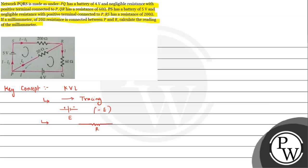Secondly, if we move across a resistance of value R and a current I is passing through it, and our tracing direction is the same as the current direction, there will be a potential drop and it will be written as minus IR. If the current direction is opposite to the tracing direction, we would take the value as positive. These are the two important points regarding KVL — Kirchhoff's Voltage Law — applied in a closed loop.